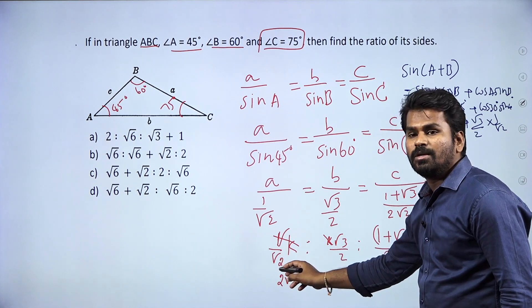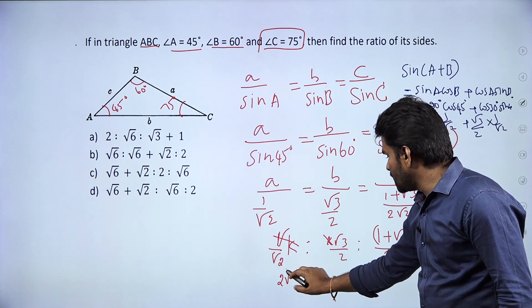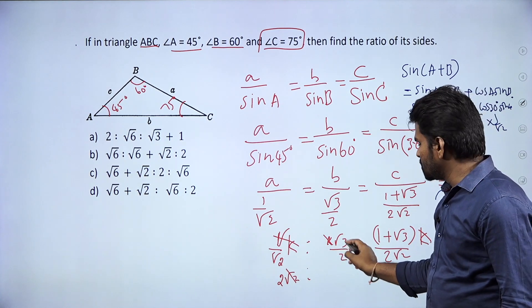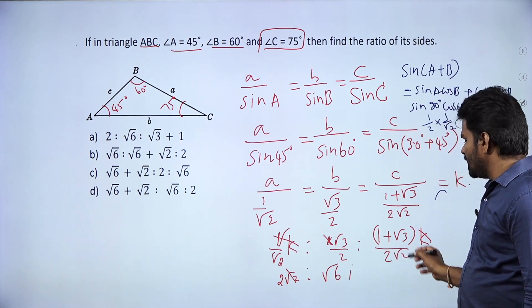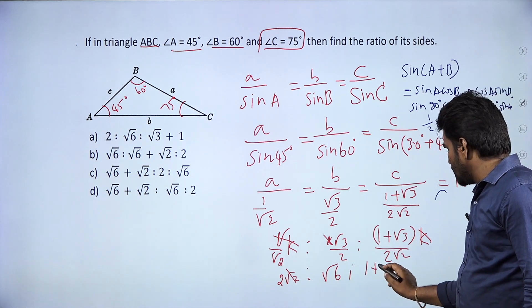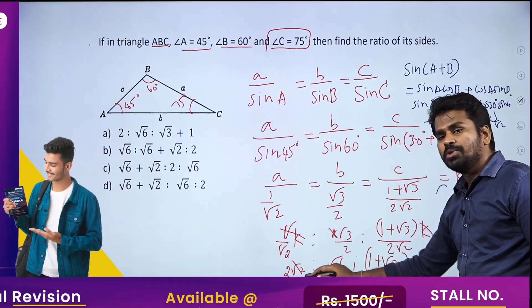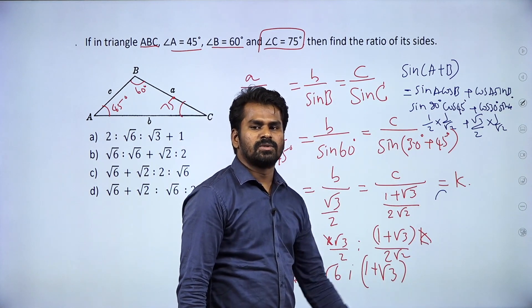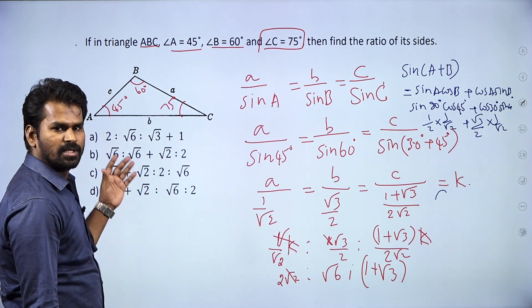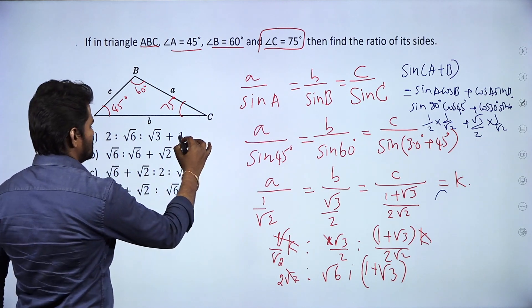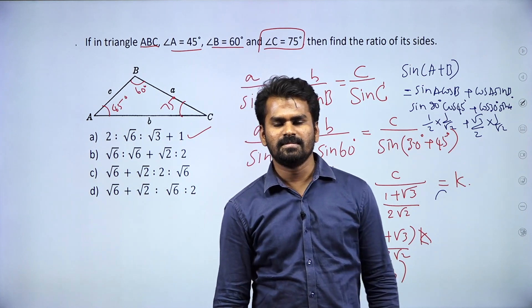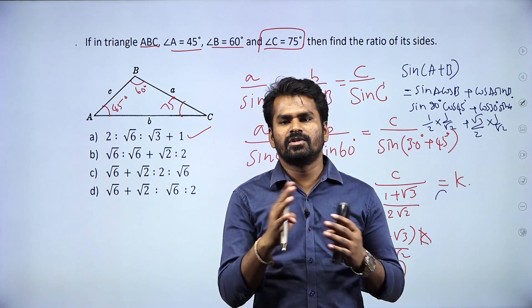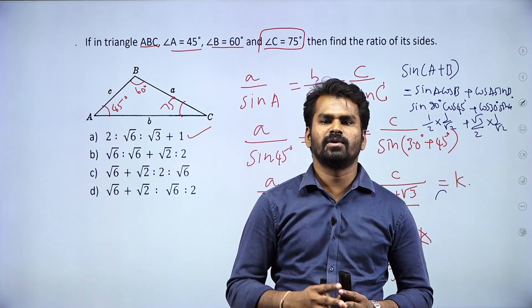Making the denominator 2√2 throughout: a becomes √2, b becomes √6, and c becomes (√3 + 1). So the final ratio of sides a : b : c is √2 : √6 : (√3 + 1). Using the sine rule, we can easily find the ratio of the three sides of the triangle.